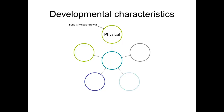Bone and muscle growth affect a child's center of gravity, how they walk, their change in gait, when they lose their teeth, how their speech changes, and their coordination. A change in coordination affects how they play, how they participate in PE, and their fine motor skills — also known as small motor or muscle skills — and their large motor or muscle skills. This in turn affects writing, drawing, cutting, as well as getting up and down out of chairs, climbing stairs, and moving from one place to another.